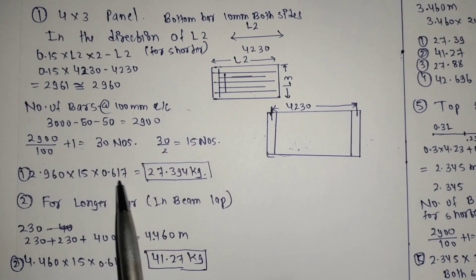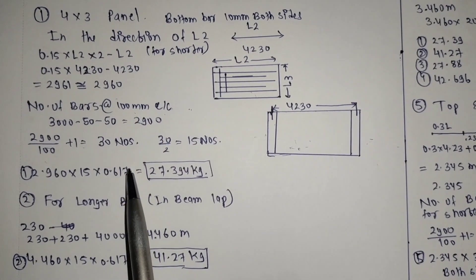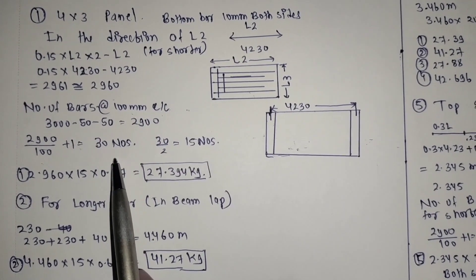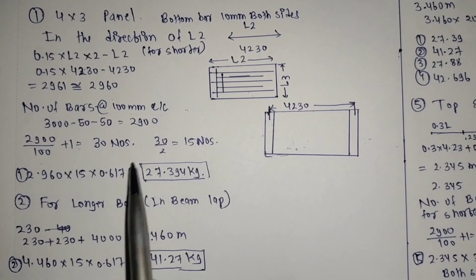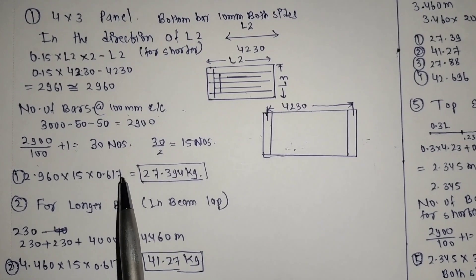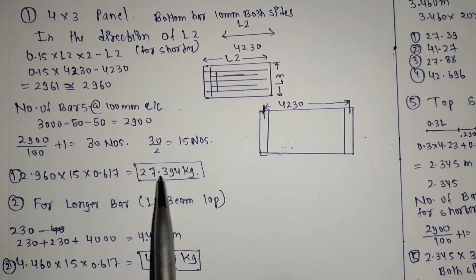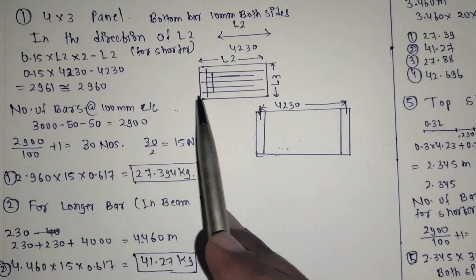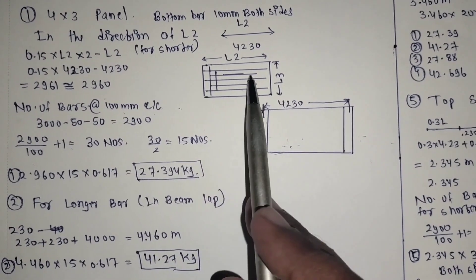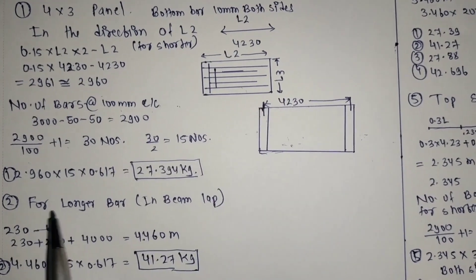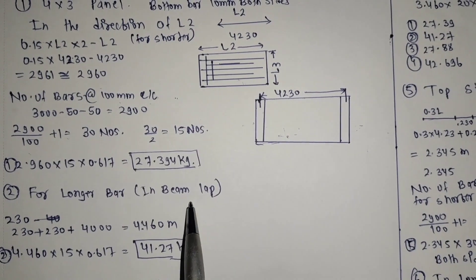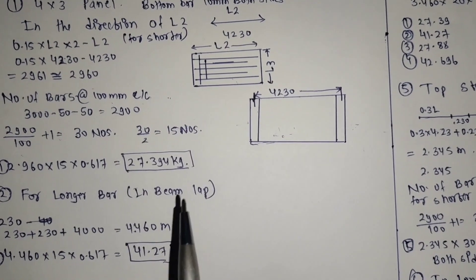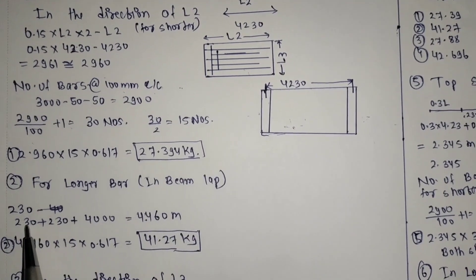The unit weight of 10 mm bar per 1 meter length is 0.617 kg. We will get 227.394 kg in this direction. For the longer bar in the beam direction, we add 230 mm on both sides plus 4 meters to get 4.460 meters.